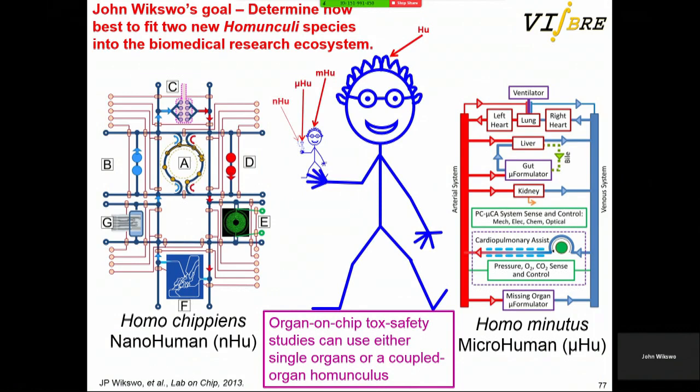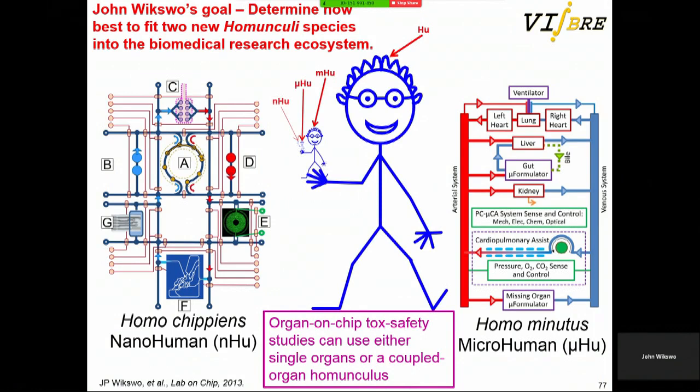My career goal right now is to introduce two new species: homochipians, which is a nanohuman, and homomeneutis, which is a microhuman. We do organ-on-a-chip safety testing, and when you couple the organs together you create a homunculus — a millihuman holding a microhuman holding a nanohuman.